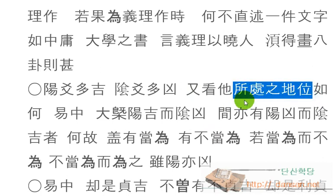즉 1, 2, 3, 4, 5, 6 순서대로 이랬는데, 1자리에 양이 오고 2자리에 음이 오고 3자리에 양이 오면 득정을 한 거에요. 바른 것을 얻은 거에요. 양의 자리에 양이 오고 음의 자리에 음이 오는 것은 득정. 1, 2, 3 중에서 2는 가운데잖아요. 그 자리는 득중을 한 거에요. 득중, 득정 두 가지 개념을 아시면 돼요. 그게 바로 지위가 어떤지를 봐야 된다는 거에요.